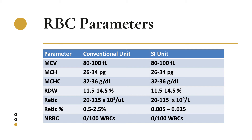In SI units, the reticulocyte count value is the same but the unit is 10 to the 9th cells per liter, with a percentage of 0.005 to 0.025. Nucleated RBCs should not be present in normal blood, having a reference value of 0 per 100 WBCs.